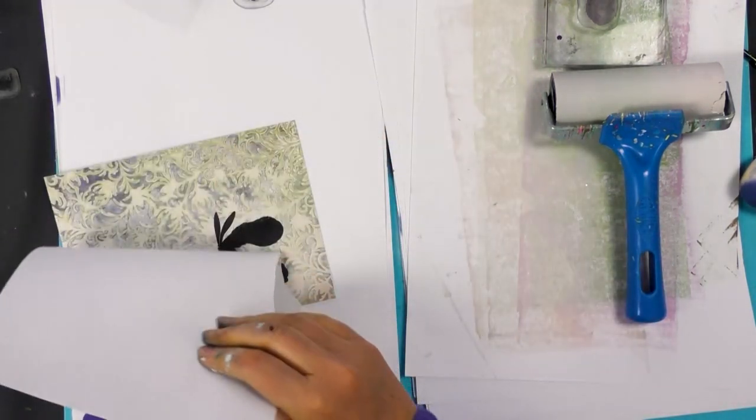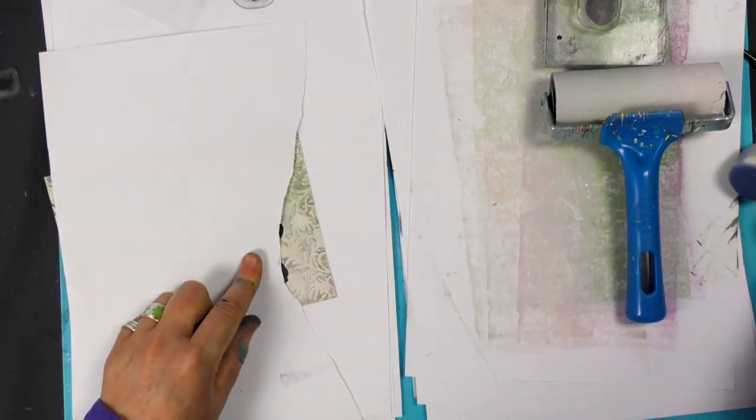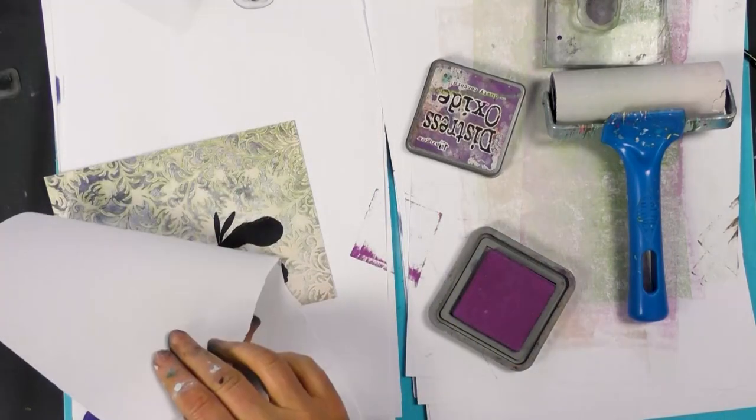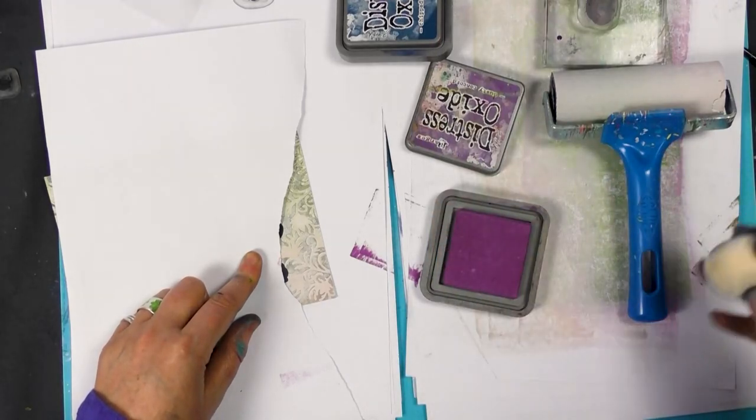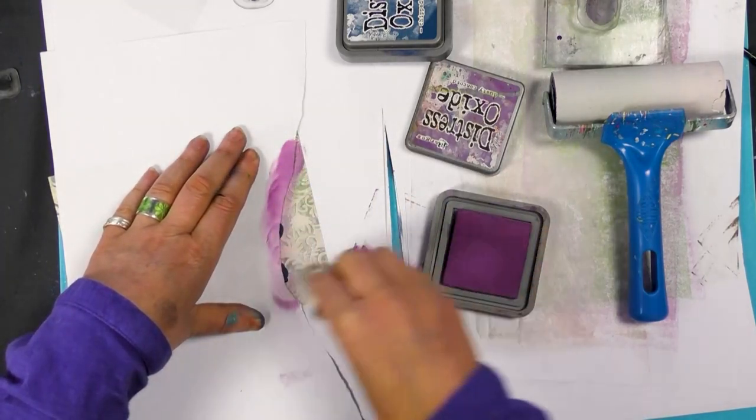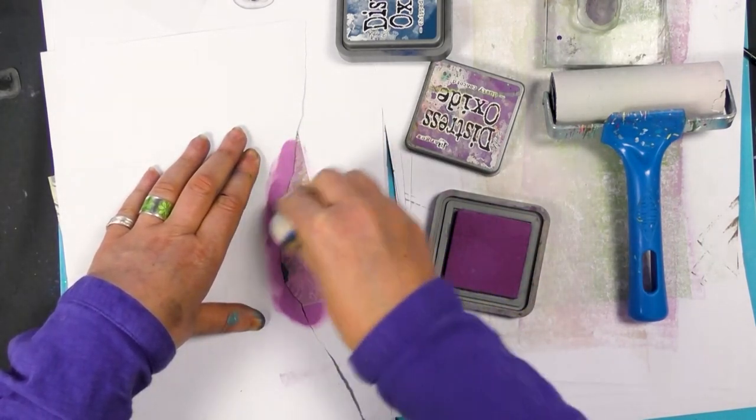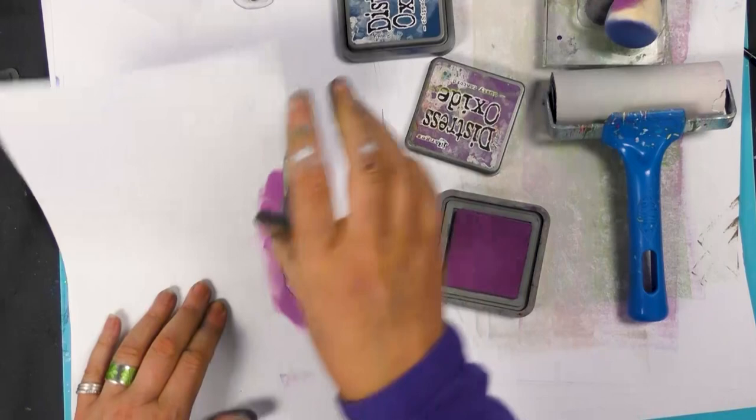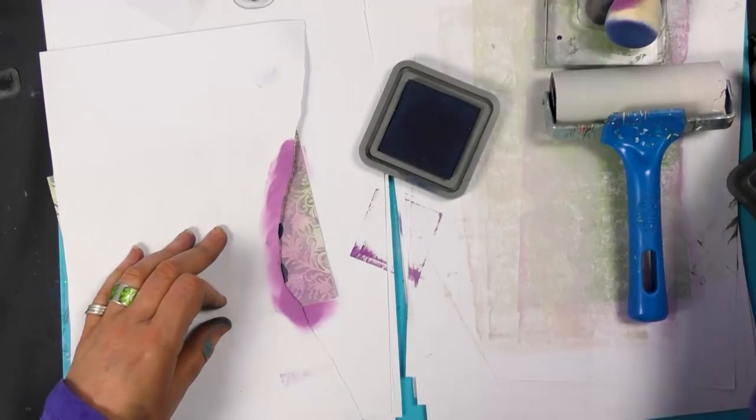So I'm going to see what colors we've got going on here. So I'm thinking, let's have a look at that color. Maybe I'll use a combination actually so I'll try this color now. So that gives us a nice sort of pink background and then I'm going to use the chipped sapphire.